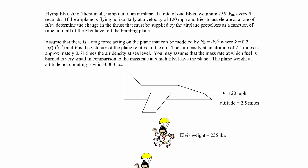Assume there's a drag force acting on the plane that can be modeled by minus kv squared, where k is 0.2 pounds force per square foot per square second, and v is the velocity of the airplane. The air density at an altitude of two and a half miles is approximately 0.61 times the air density at sea level. We can assume that the mass rate at which fuel is burned is very small compared to the mass rate at which Elvi leave the plane.